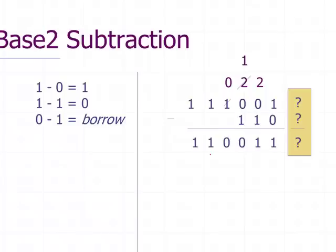And if you verify it, that's 57 minus 6 should equal 51.